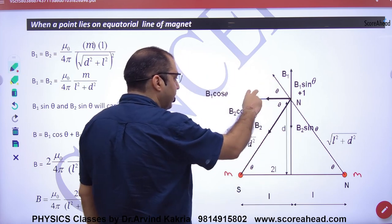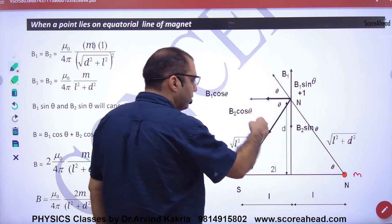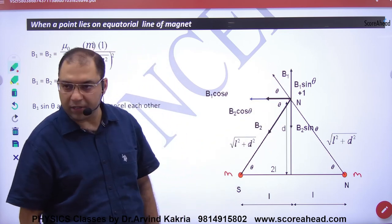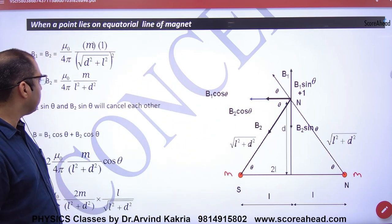B1 has two components: B1 cos theta and B1 sin theta. B2 has two components: B2 cos theta and B2 sin theta. What is the point? These components cancel. Net B value will come. We will add both.